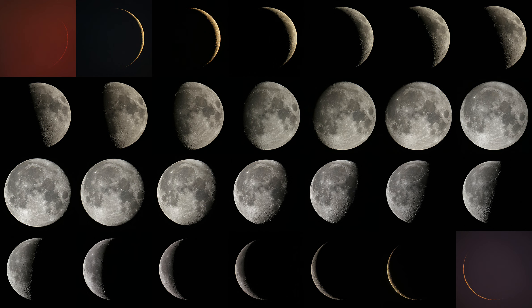NASA's APOD Update of October 1, 2022: Lunation Matrix. Observe the moon every night and you'll see its visible sunlit portion gradually change. In phases progressing from new moon to full moon to new moon again, a lunar cycle or lunation is completed in about 29.5 days.